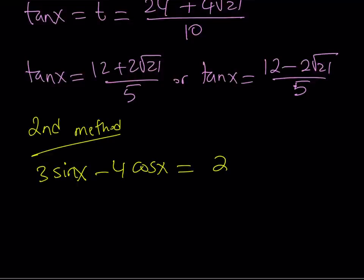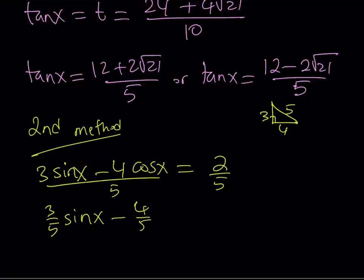I'm going to divide both sides by 5. The reason is, if you look at the coefficients of sine x and cosine x, they are 3 and 4. I'm using the Pythagorean theorem here, a 3, 4, 5 triangle. You'll see why this is helpful. Let's divide both sides by 5. This gives us 3 over 5 sine x minus 4 over 5 cosine x equals 2 over 5.